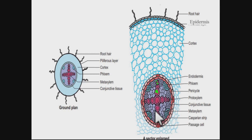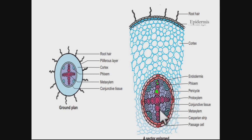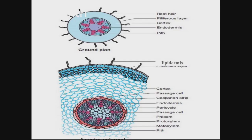One more thing: if we talk about the pith, it is very small or usually absent in the case of dicot root. Whereas in the case of monocot root, pith is more prominent and well-defined. This concludes our discussion of dicot root, and now let's talk about the monocot root.